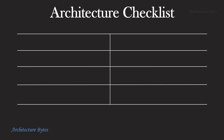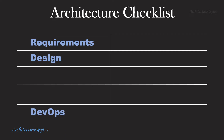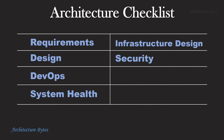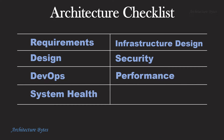The Architecture Checklist consists of Requirements, Design, DevOps, System Health, Infrastructure Design, Security, Performance, and Disaster Recovery.